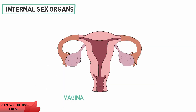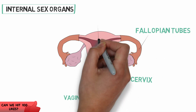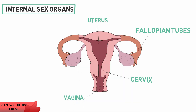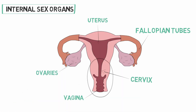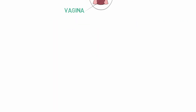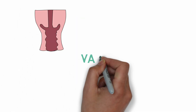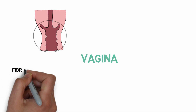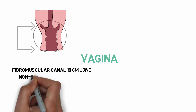The internal sex organs consist of the vagina and the cervical canal, two fallopian tubes, the central uterus, and a pair of ovaries. The vagina is a fibromuscular canal which is 10 centimeters long, lined by non-keratinized stratified squamous epithelium.